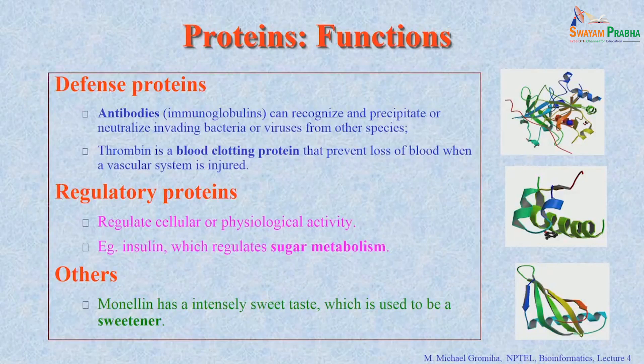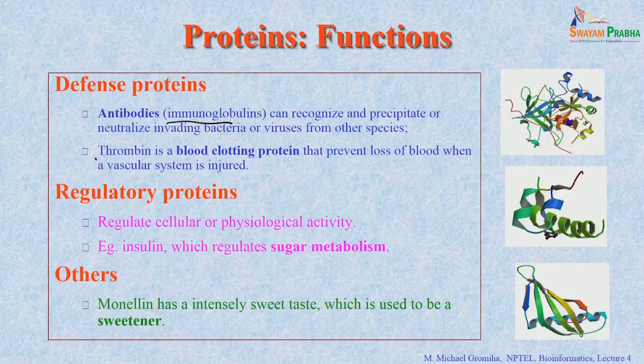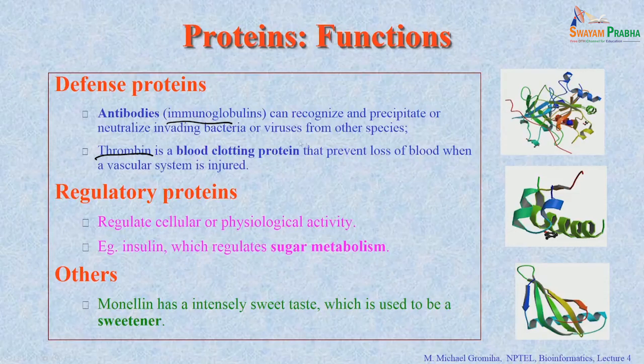There are other proteins called defense proteins — antibodies. We need to be safe from the environment, from bacteria or viruses. Immunoglobulin can recognize and precipitate or neutralize invading bacteria or viruses from other species. There is another protein called thrombin, which is a very important blood clotting protein. When you get injured, it causes clotting to prevent the loss of blood in the vascular system.